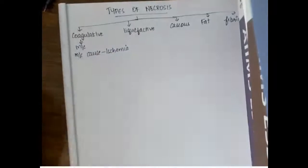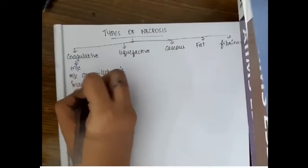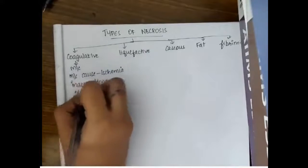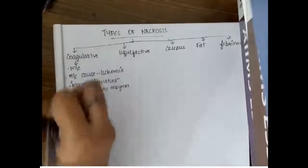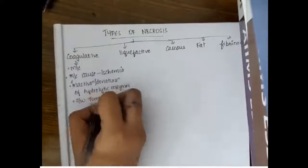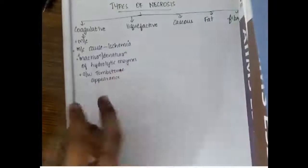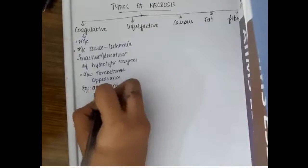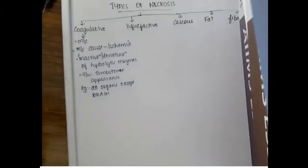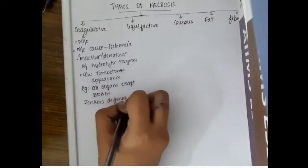First, let us learn about coagulative necrosis, which is the most common type of necrosis and occurs most commonly due to ischemia. Whenever there is inactivation or denaturation of hydrolytic enzymes, coagulative necrosis will occur. This is associated with tombstone appearance and occurs in all organs of our body except the brain. The appearance of the organ remains intact; there is no loss of tissue architecture.